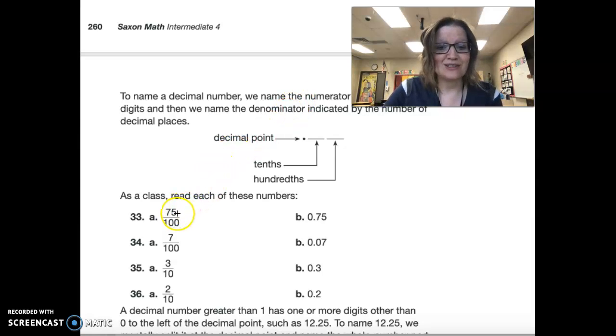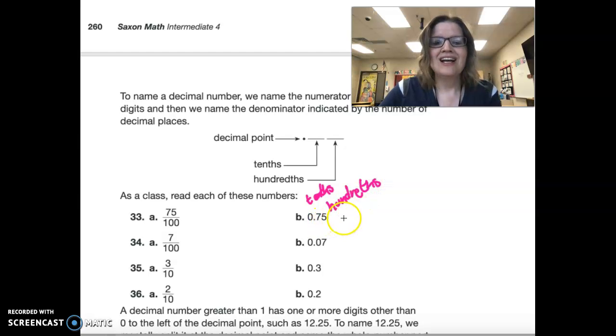Let's do some reading. As a class, I want you to read this with me. I have to say everything correctly. This is seventy-five hundredths. And look over here. We have our tenths place. I'm just going to make a note. Tenths. And our hundredths. And so we go for the furthest one over. This is seventy-five hundredths.